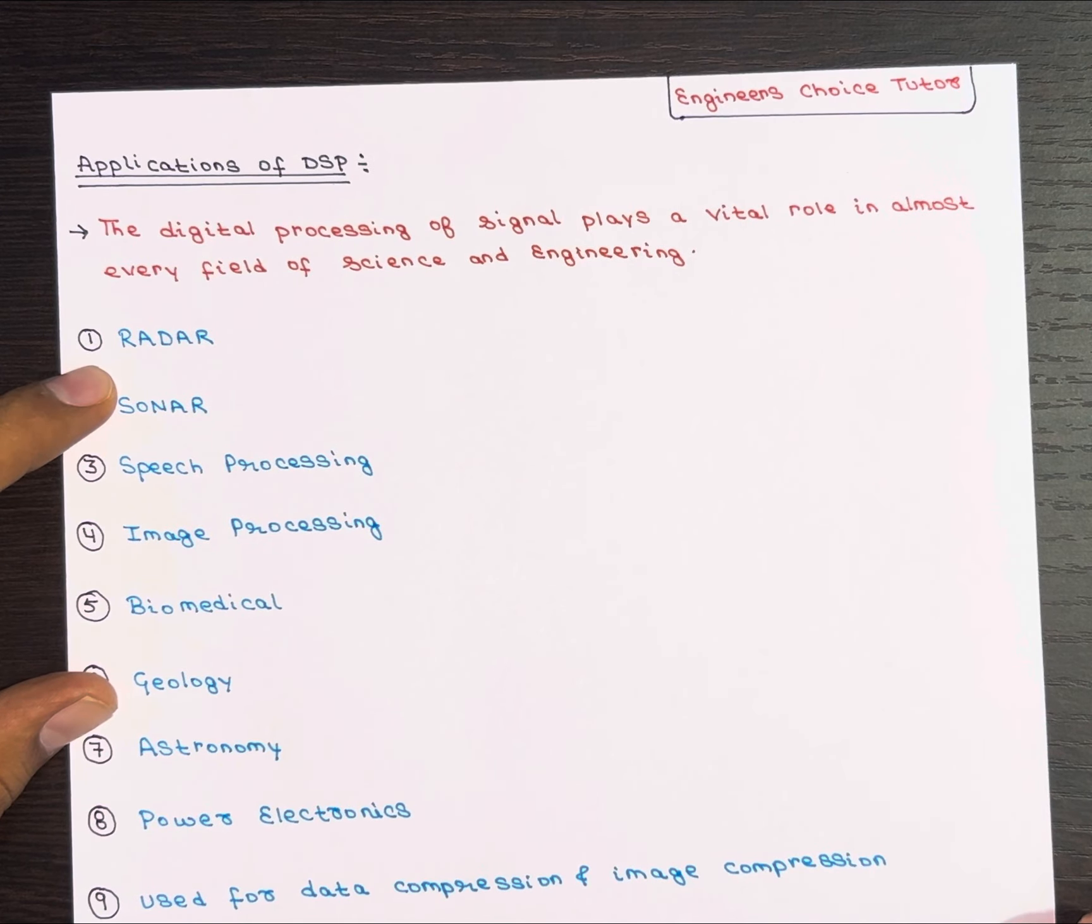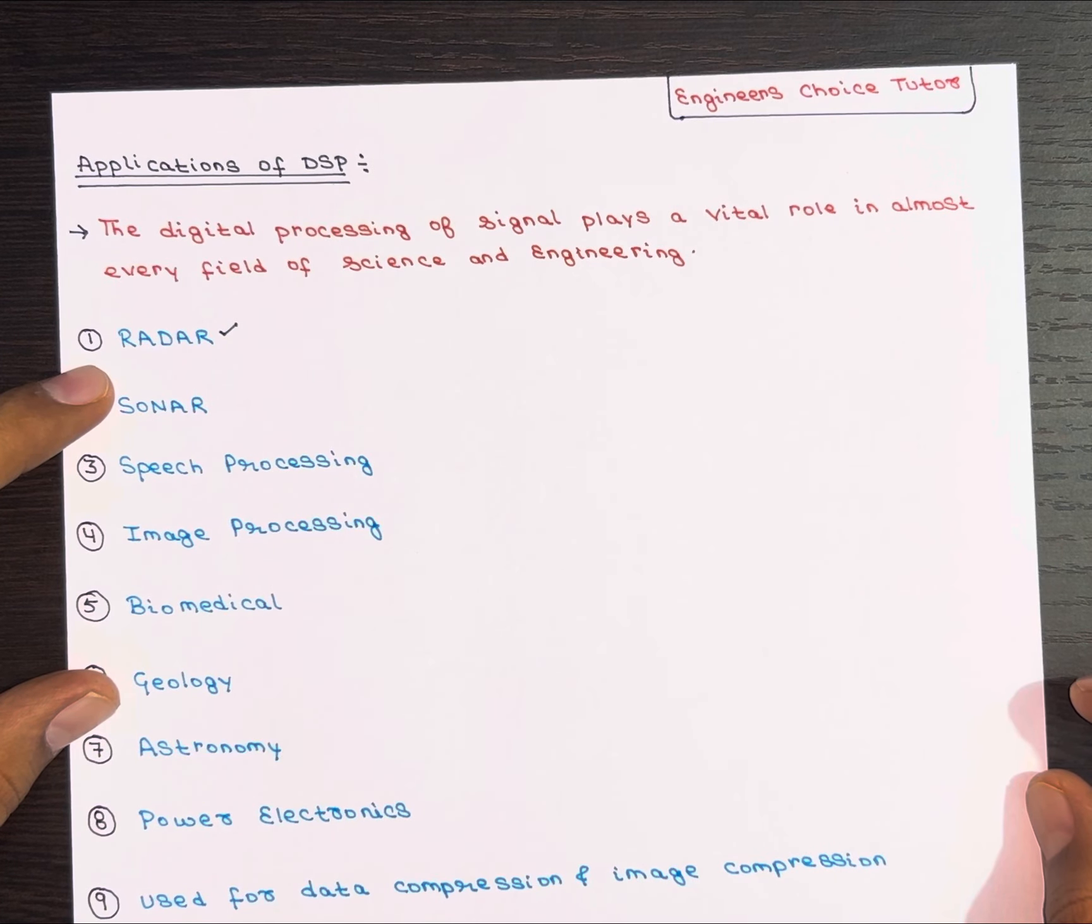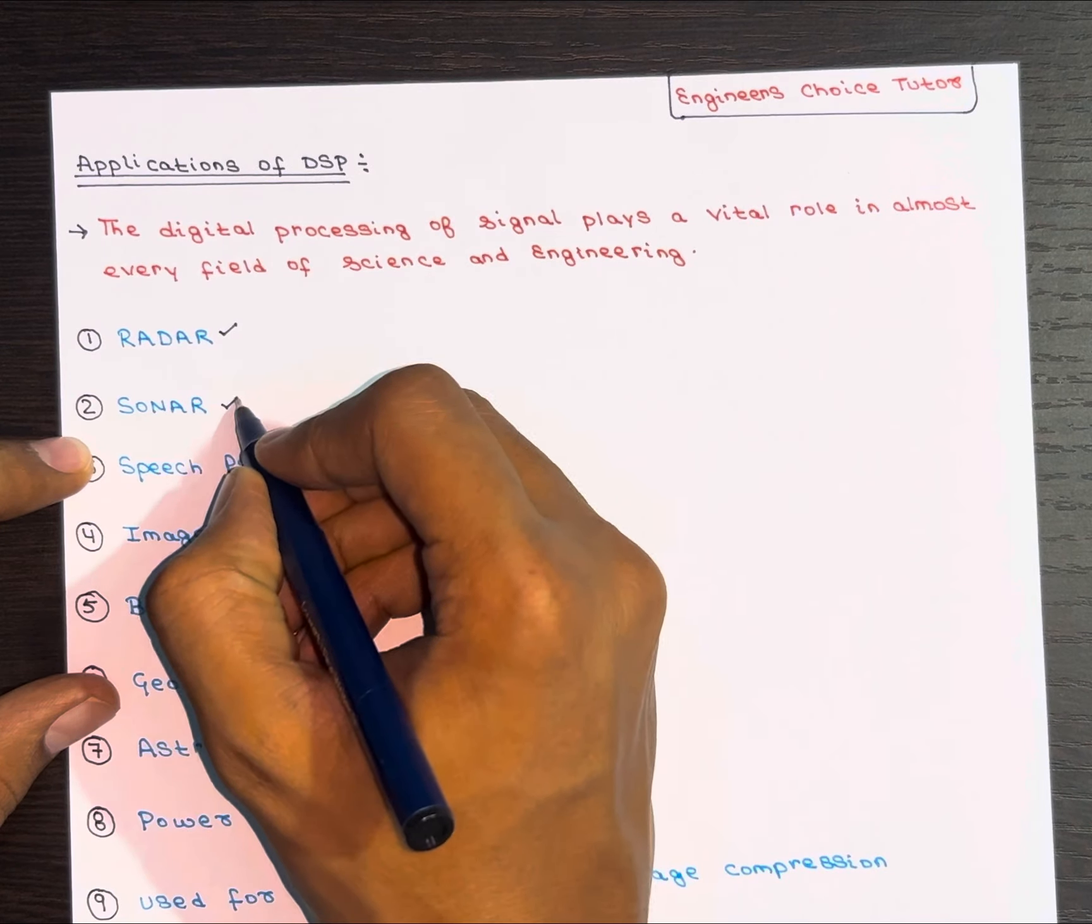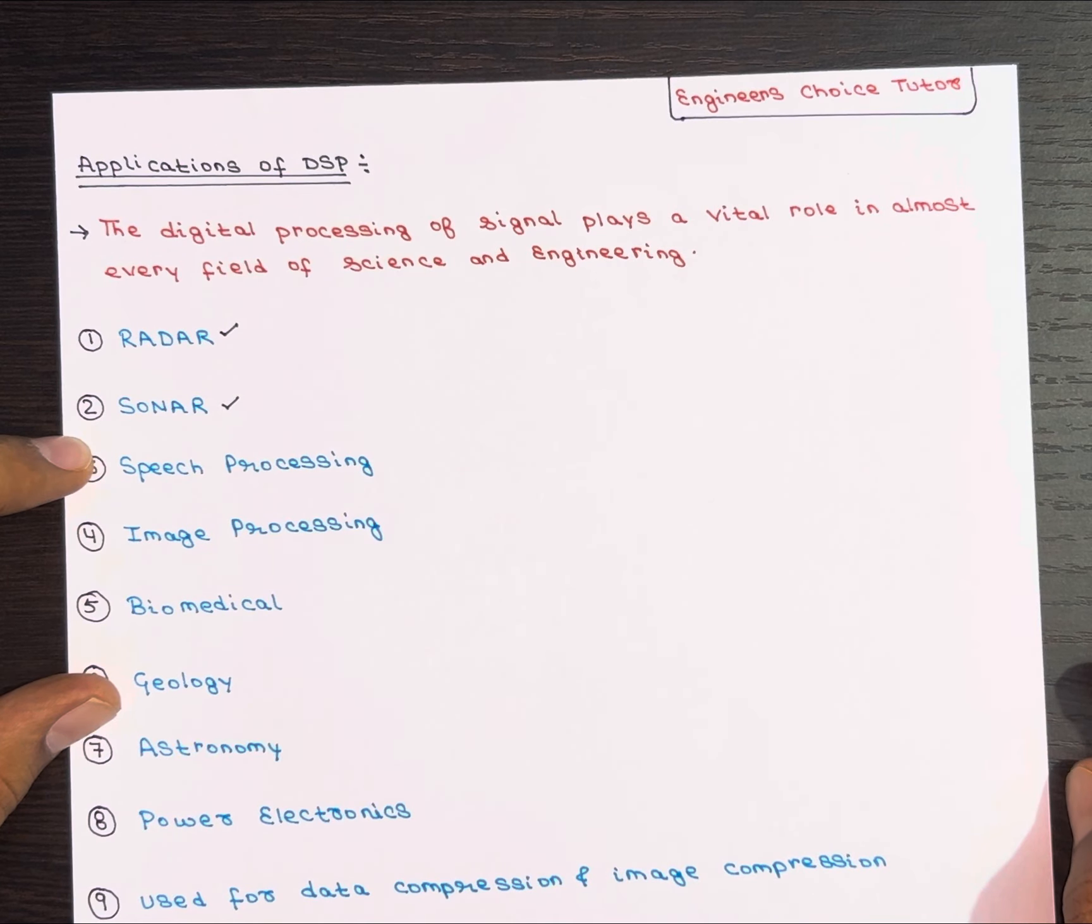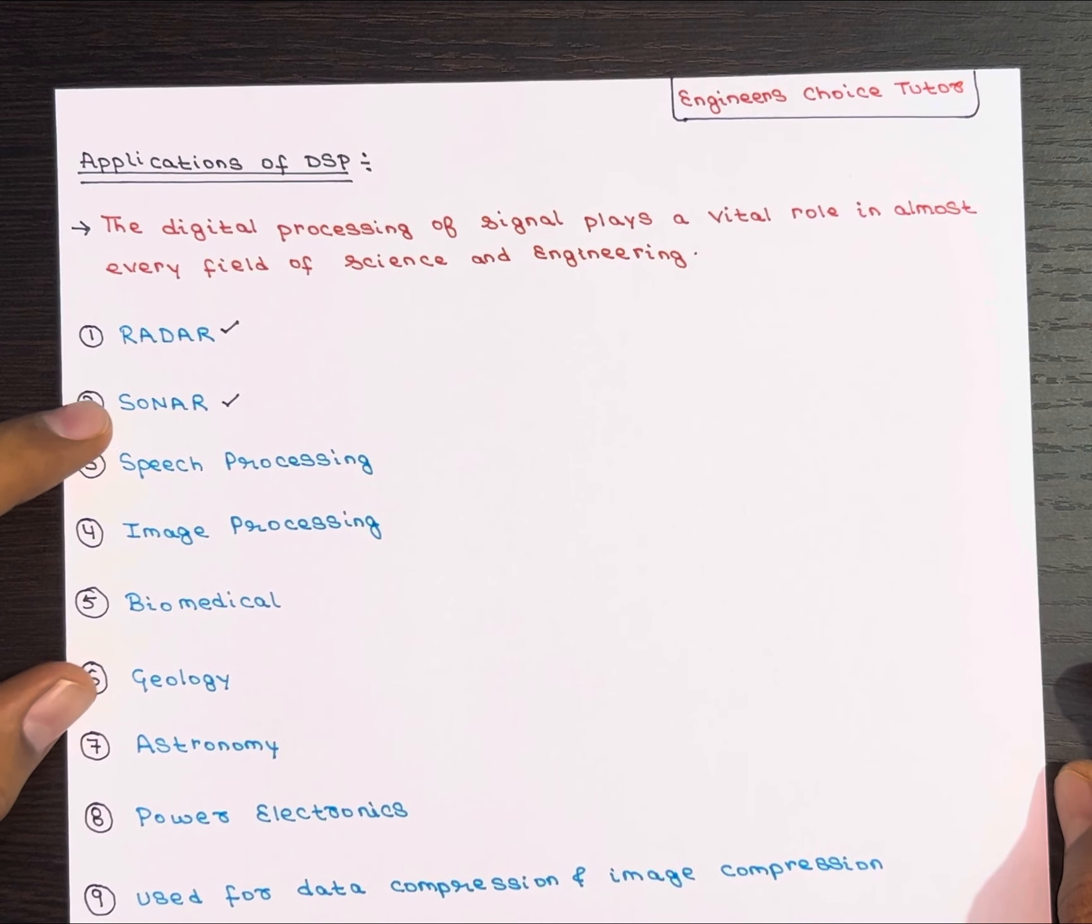Let me give you a rundown of some of the cool applications. First, it is used in radar engineering. DSP helps with analyzing and interpreting radar signals. Next is sonar engineering. Similar to radar, digital processing is used to process and understand sonar signals.